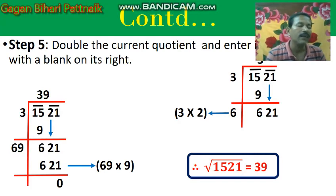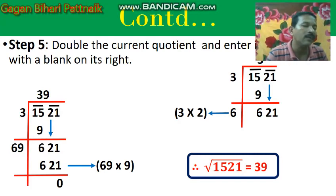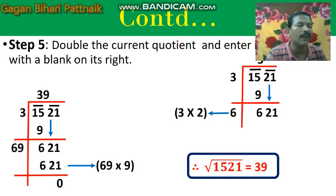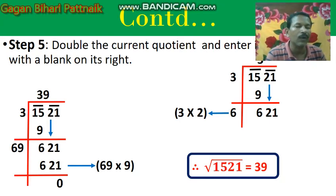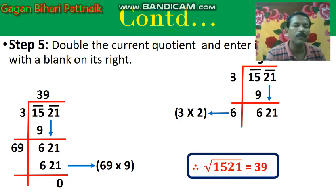That's why the square root of 1521 is equal to 39. One thing — after writing 9 here, you will write it after 3, and the quotient will be 39. So the square root of 1521 is equal to 39. I think you understood this. If you didn't understand, you can ask me in my next class. Thank you.